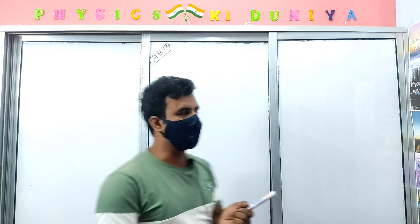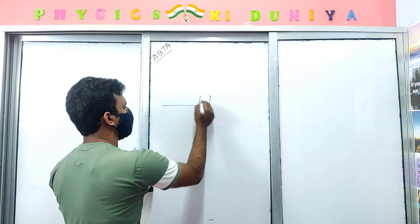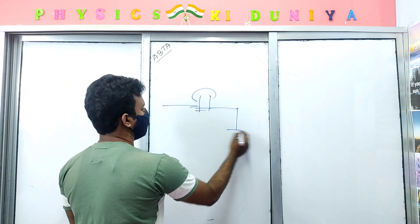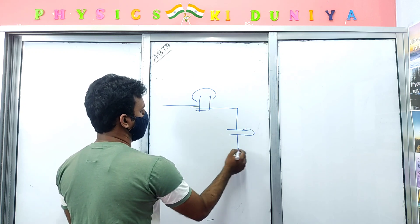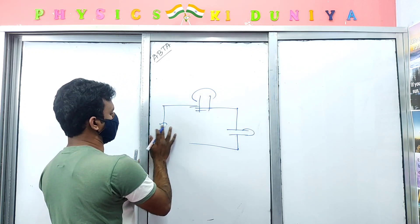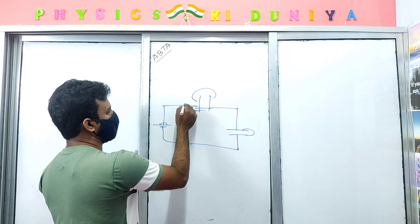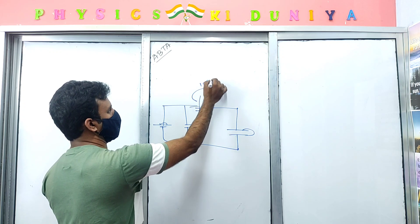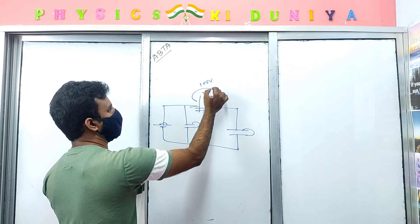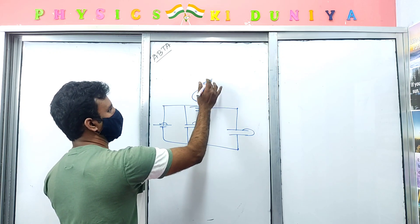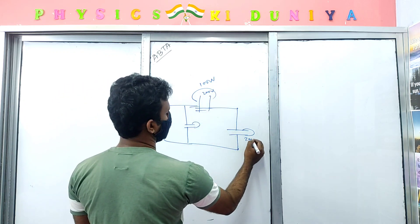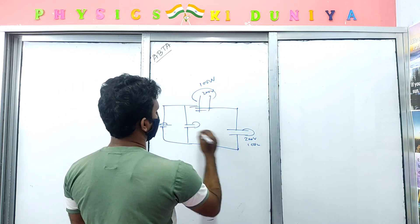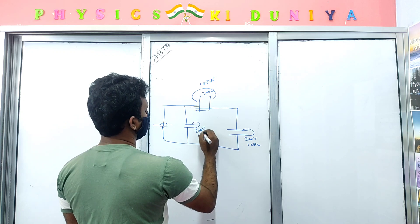So, we will see. First of all, give a little light and give an input. This is the voltage of the battery, and this is the lamp. This is the rating of 100V 200W. This is 200V 200W.